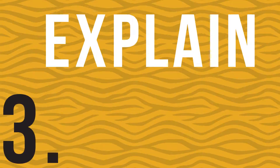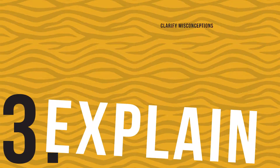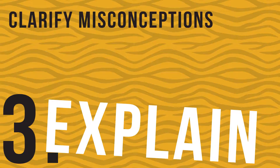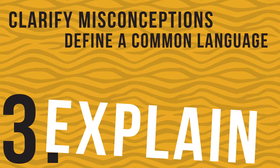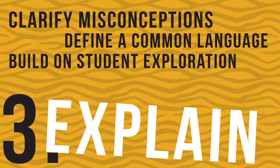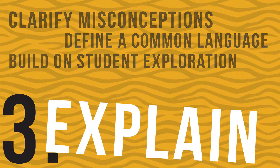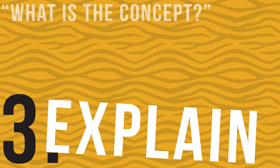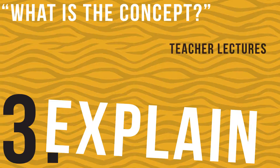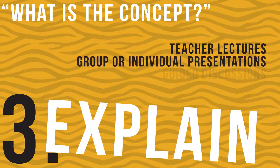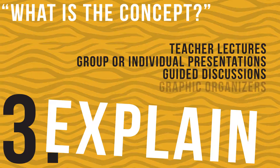Step 3: Explain. The purpose of the explain step is to clarify misconceptions students may have about the concept and define a common language to discuss it. In this step, the teacher builds on what the students found during their exploration. The main question we focus on during this step is: what is the concept? Some examples of explaining a concept are teacher lecture, group or individual presentations of findings, guided discussions, and graphic organizers.